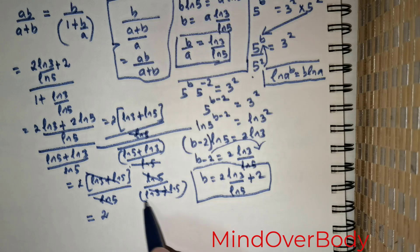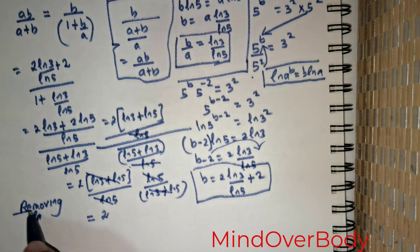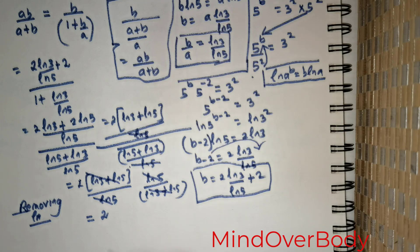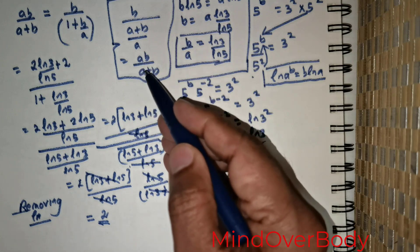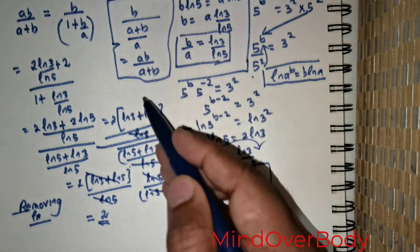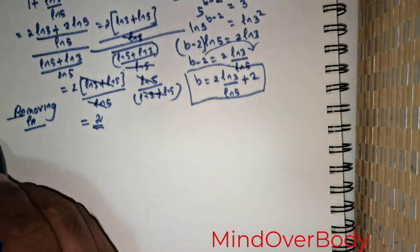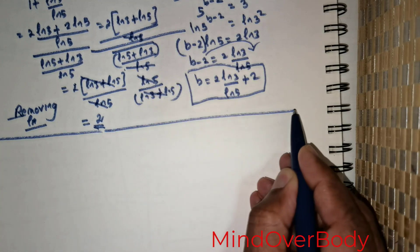Technically speaking, we shouldn't say 'cancelling' — the more acceptable term is 'removing' the common terms. So the answer is 2. Note that if you were to find the reciprocal — that is, a plus b over ab — you would get 1/2. That is the beauty of it. Now let me move on to show you the same question using another method.